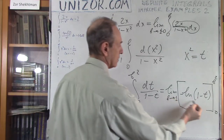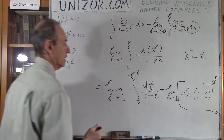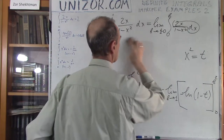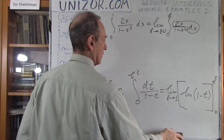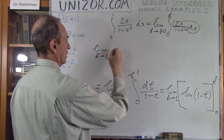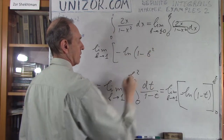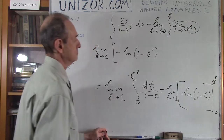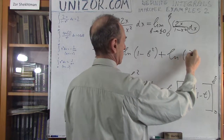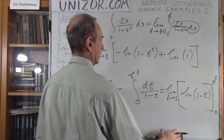We need to substitute the values from 0 to b squared. So the indefinite integral is minus ln(1 minus t), and substituting gives the limit as b goes to 1 of: minus ln(1 minus b squared) minus minus ln(1 minus 0). So that's minus ln(1 minus b squared) plus ln(1), and ln(1) is 0.